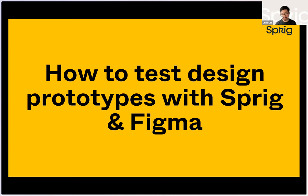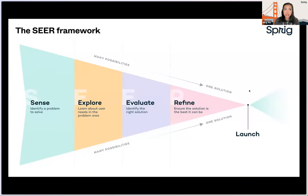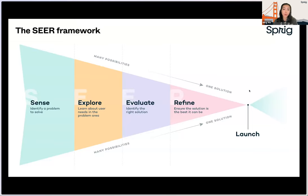Now we're going to talk about the tactics of how you can use Sprig and Figma together to test your own design prototypes. I'm going to hand it over to Ning to talk about when you might actually think about testing in design. Thanks, Chris. In order to answer this question, I'd like to introduce a framework called SEER. SEER stands for Sense, Explore, Evaluate, and Refine — a framework that Sprig worked with many successful product teams such as Zoom, Google, and Dropbox to help teams systematically develop a process for collecting and acting on user feedback across the entire product development lifecycle.